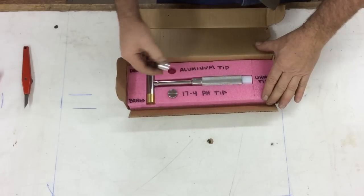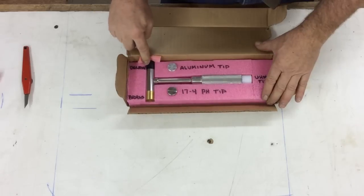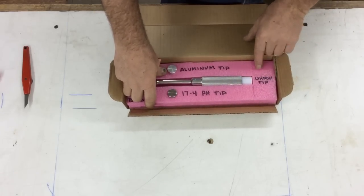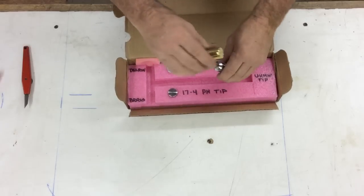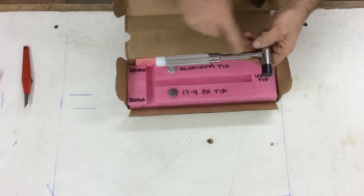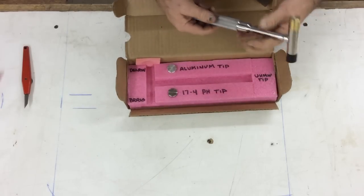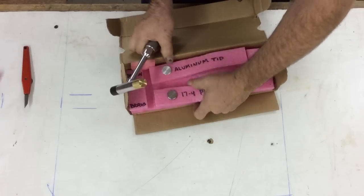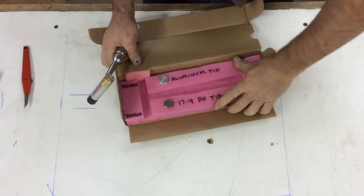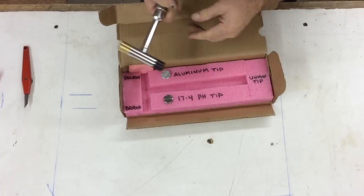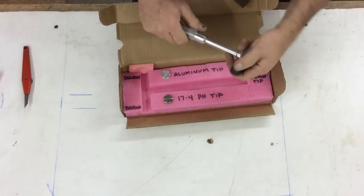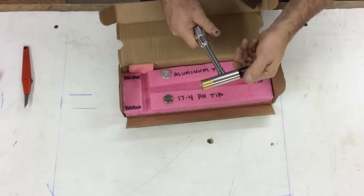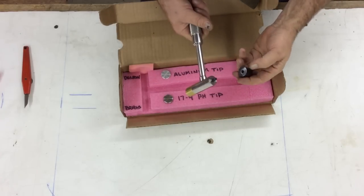Nice aluminum one, this one says Delray. And this one's brass. And down here UHMW. And I know this is the rest of stainless, the 17-4 pH. I think I don't see any other notes in the box.